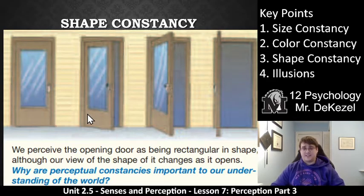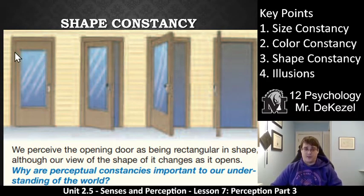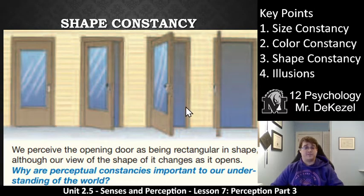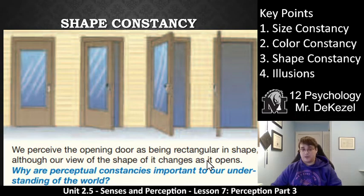Shape constancy is the same idea. When you open a door, whether it is completely closed, partially open, or all the way open, we have an understanding that the door is a rectangle. We don't think the door has suddenly become just a sliver — we understand there's a glass panel and a door handle behind it. We perceive the door as rectangular in shape even though our view of its shape changes as it opens.